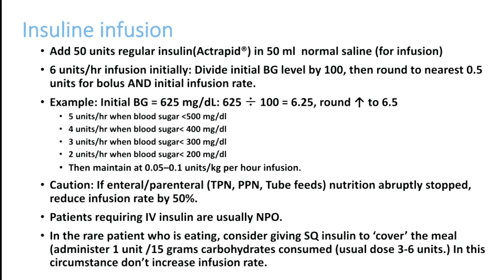Do not stop insulin infusion abruptly. Start with fluid, correct potassium, then start infusion at 0.15 units per kg initially. Adjust according to blood sugar: 600 mg/dL gives 6 units per hour, 500 gives 5, 400 gives 4. After one hour, if blood sugar is not coming down — or is at 625, 700, or even 600 — double the dose from 6 to 12 units. If it is coming down, slowly reduce the insulin infusion.